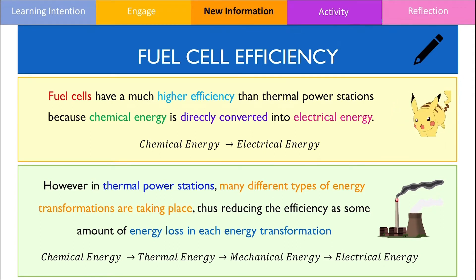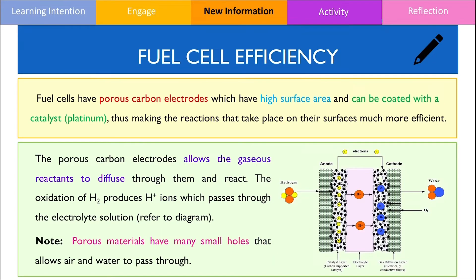We can also explain the high efficiency of fuel cells due to its design. Fuel cells contain carbon electrodes that are porous which increases the surface area, thereby increasing the rate at which the reactants can either lose or gain electrons. Additionally, the porous electrodes also help the gaseous reactants reach the catalyst layer where the reaction takes place. Platinum is a common catalyst that is coated along each electrode to further increase the rate of reaction occurring within the fuel cell. As a result, the catalyst helps increase the amount of electron transfer and thus the overall current output.